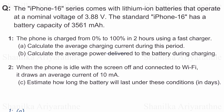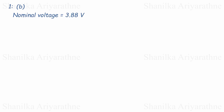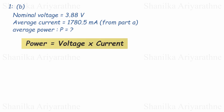For Part B, we're asked to find the average power delivered to the battery during charging. Nominal voltage is 3.88 volts, and from Part A the average charging current is 1,780.5 milliamps. Power equals voltage times current. One important thing to remember: when calculating power, we need to use amperes, not milliamperes. We get a power of approximately 6.91 watts. So the average power delivered to the battery is approximately 6.91 watts during charging.